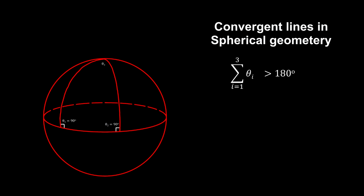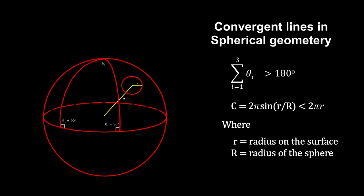Here, the sum of the angles of a triangle is greater than 180 degrees, and the circumference of a circle is less than 2 pi times its radius. This is spherical geometry. It represents space with a positive curvature.